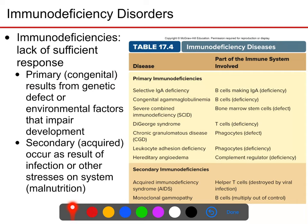Secondary immunodeficiencies are acquired. They can be acquired early or late, and they can be temporary or permanent. They are something that happens as a result of some environmental factor — often a result of infection or other stresses like malnutrition, hyperstressful environments, or lack of sleep.